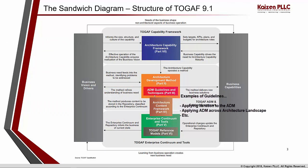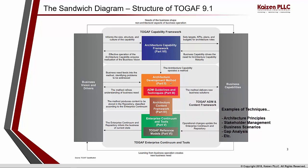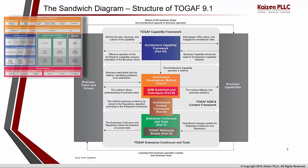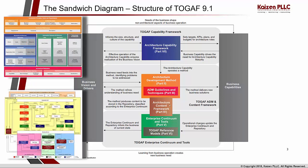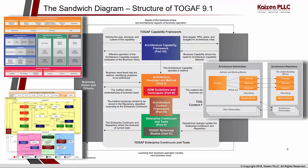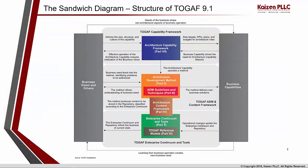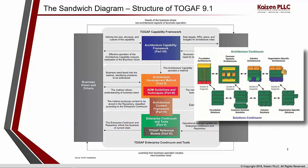When you start working on the architecture method, you will use several guidelines and techniques provided by the framework. The method refines understanding of business needs, improving the business visions and drivers as you work through it. The method also produces content to be stored in the repository, classified according to the enterprise continuum. The architecture content framework provides several key elements: a content meta model, architectural artifacts, deliverables, and building blocks.